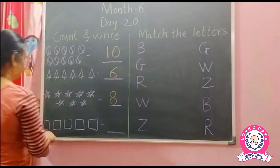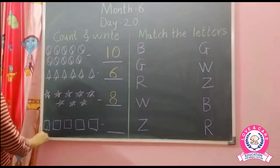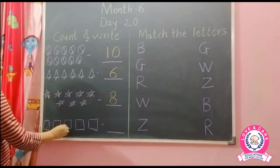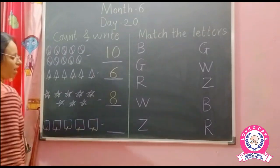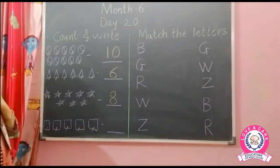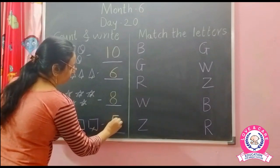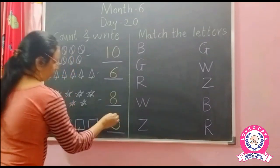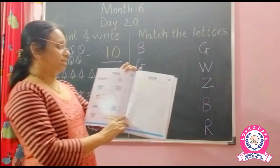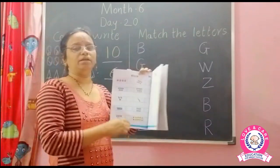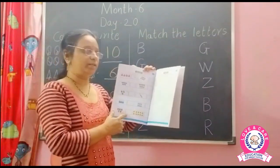Now next — square. How many squares? 1, 2, 3, 4 and 5. How many squares? 5. So write here number 5. So please count and write the correct number on this page, okay. Please complete the page.